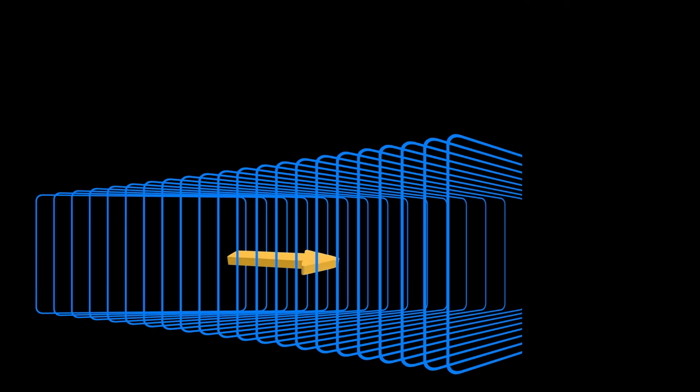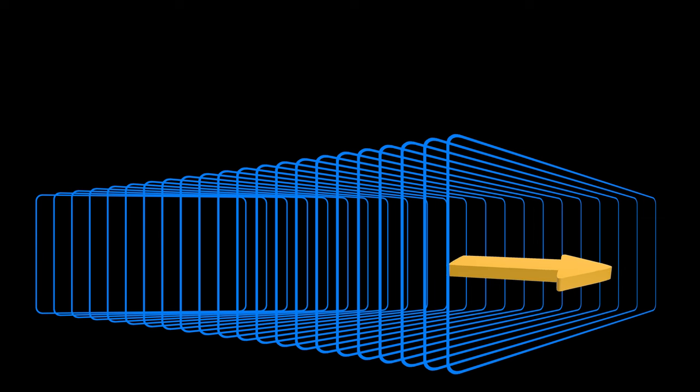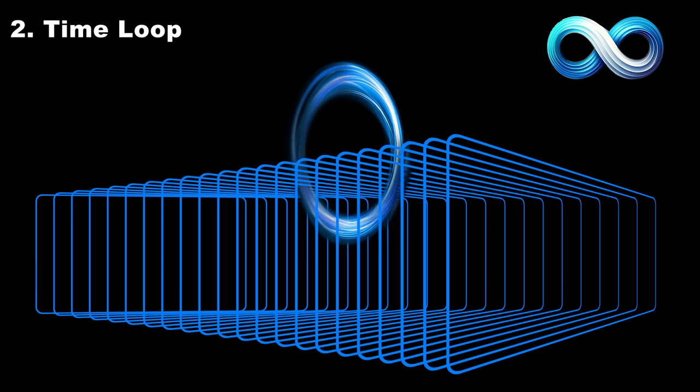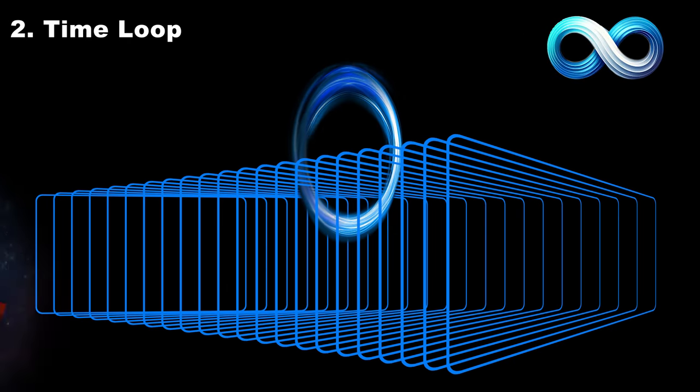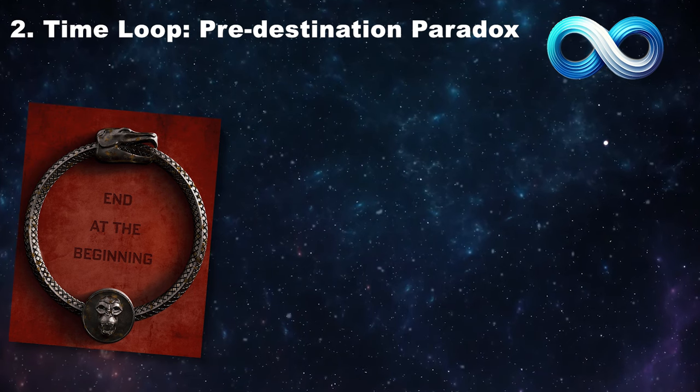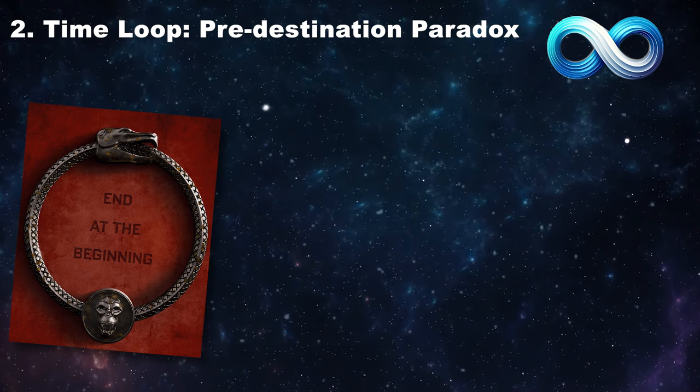However, there are other possible options as to how spacetime works. Maybe we could go back without changing the timeline. General relativity allows for a region of spacetime, warped by gravity, to loop back on itself, called the predestination paradox. A structure that could provide this shortcut tunnel to the past is called a wormhole.